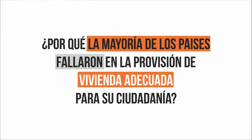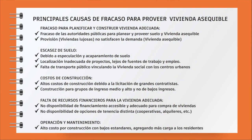Why have most countries failed in providing adequate housing for their citizens? The major causes can be summarized as: failure to plan in advance — the public sector and municipalities did not plan for affordable and accessible land and housing for lower income groups; scarcity of land due to speculation and hoarding by large owners; and selection of poorly located housing away from jobs and services.